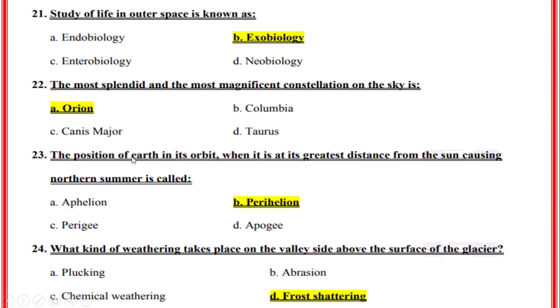The position of Earth in its orbit when it is at its greatest distance from the Sun, causing northern summer, is called? Correct option: B, Perihelion.